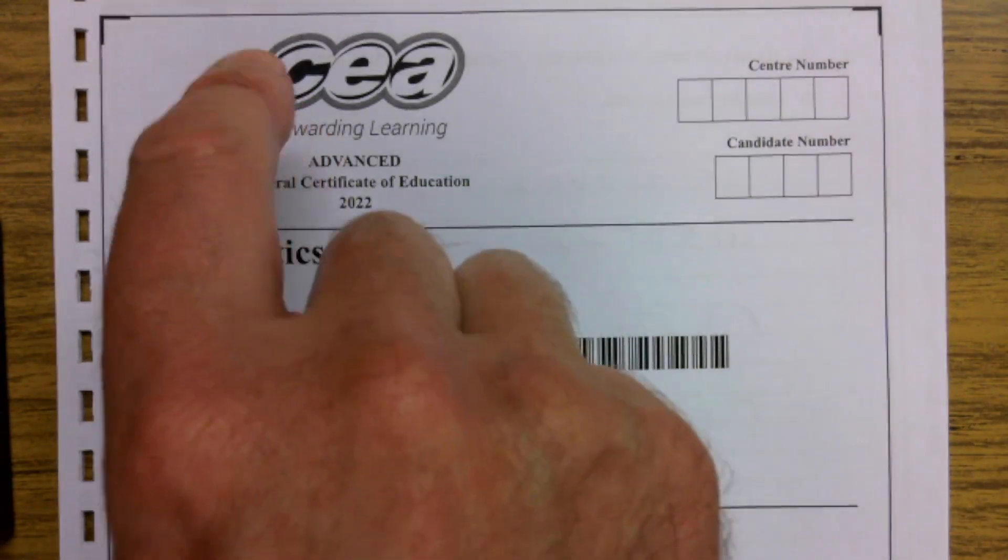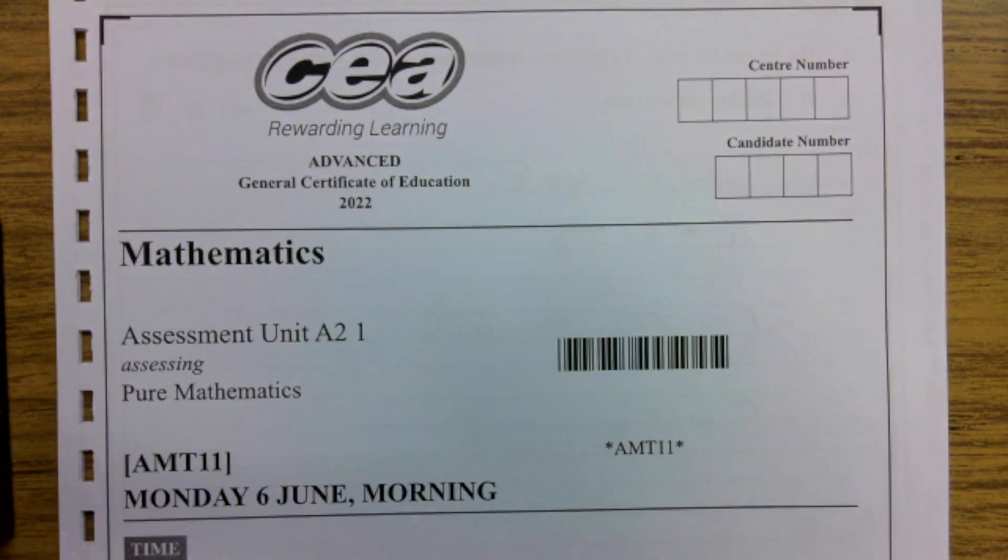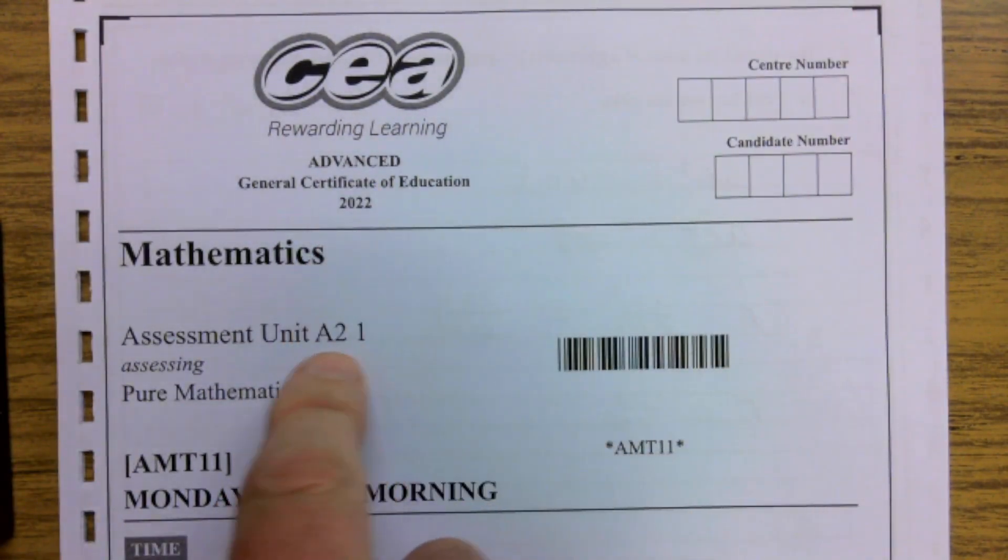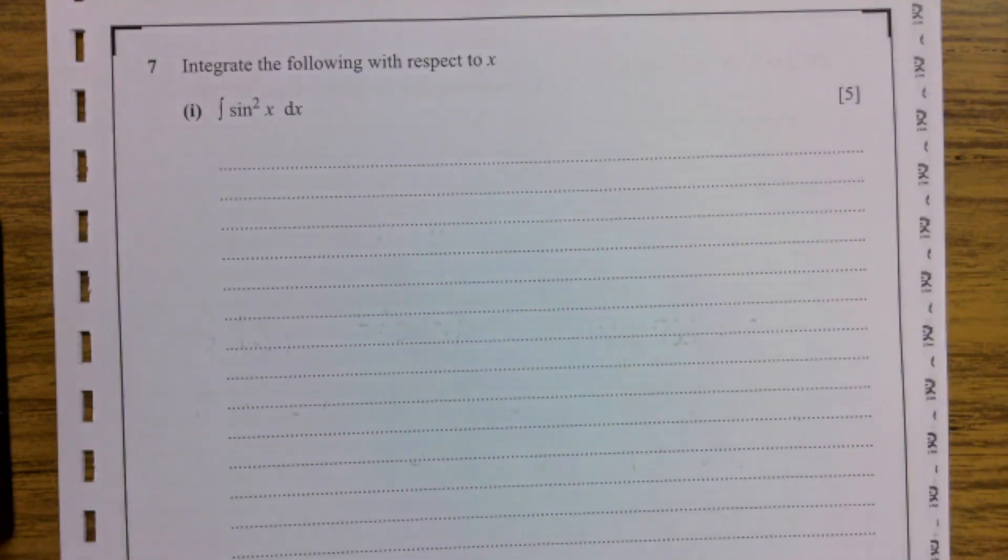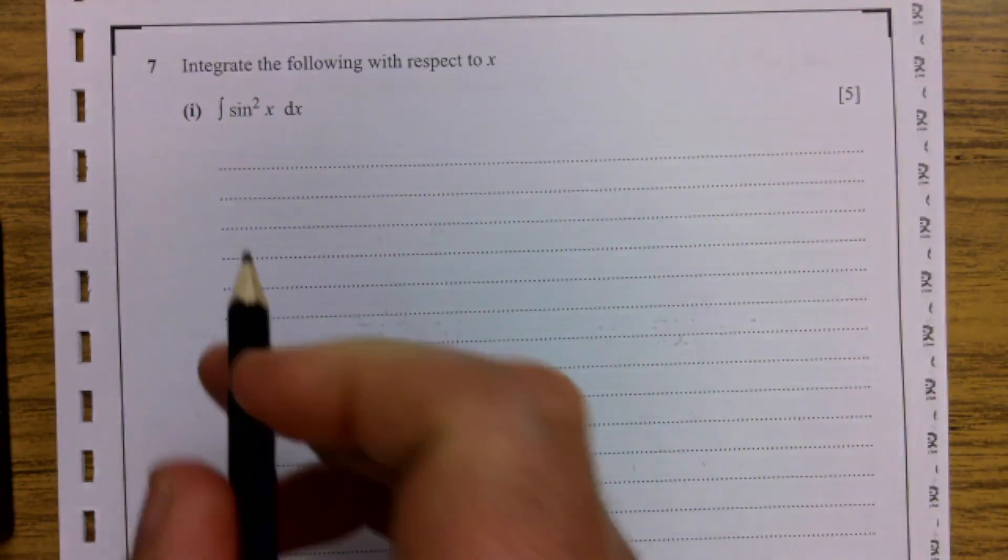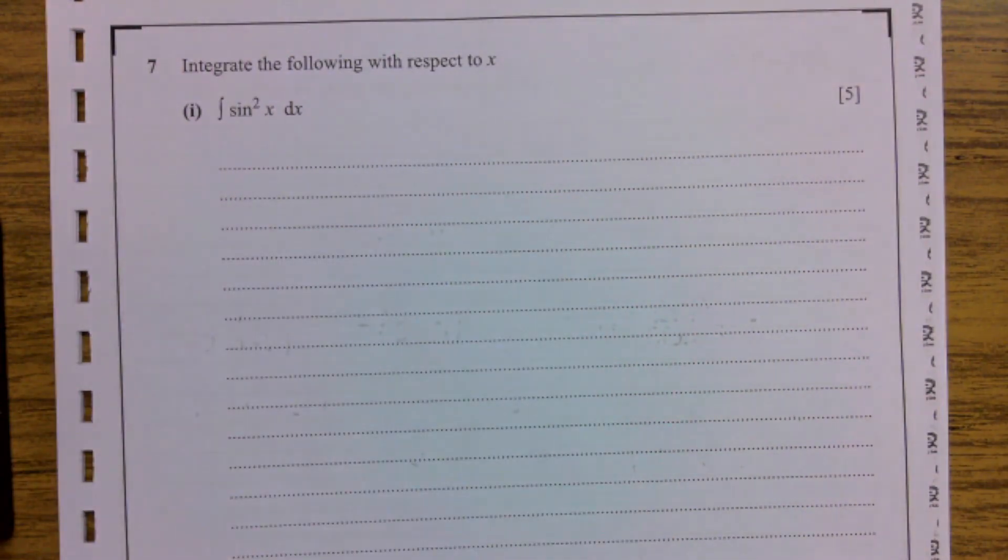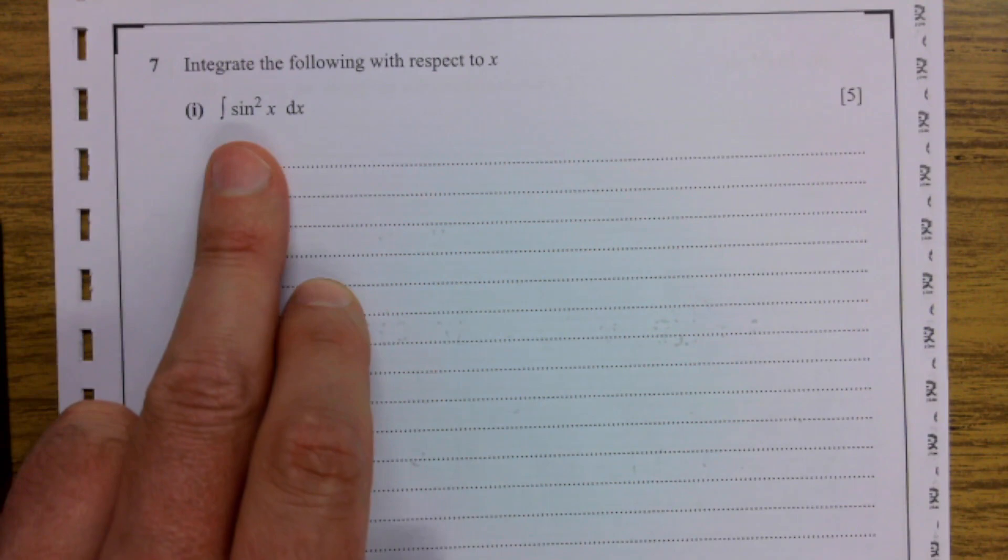This is question seven from the CCEA past paper from 2022, A2 Pure. Let's take a look. So this is question seven on integration. Integrate the following with respect to x. It's the integral of sine squared x. I always tell my class you can't integrate powers of sine and cos straight away.